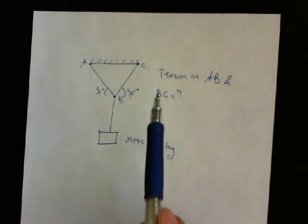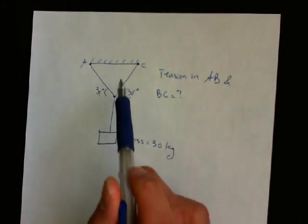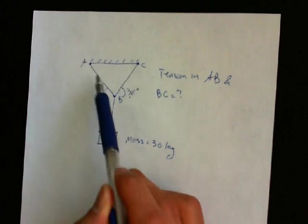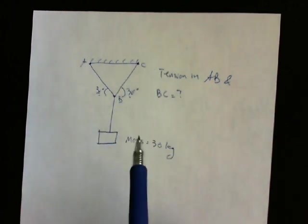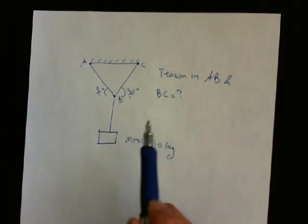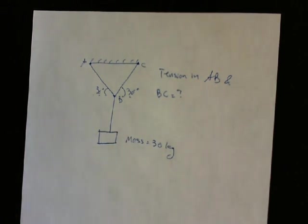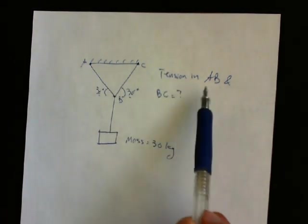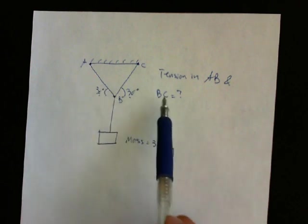In this example we have a system with a box that's attached to the ceiling via ropes AB and BC. The box has a mass of 30 kilograms. Given this, find the tension in ropes AB and BC.